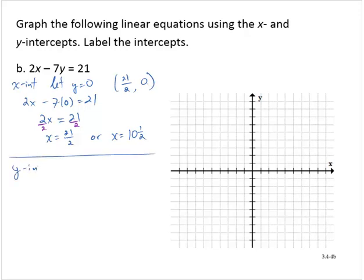And the y-intercept, letting x equal 0. 2 times 0 minus 7y equals 21. So 2 times 0 is 0. 0 subtract 7y is negative 7y equals 21.